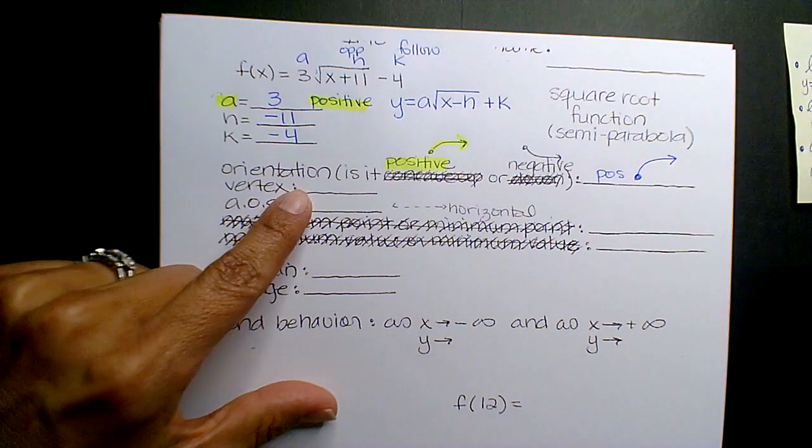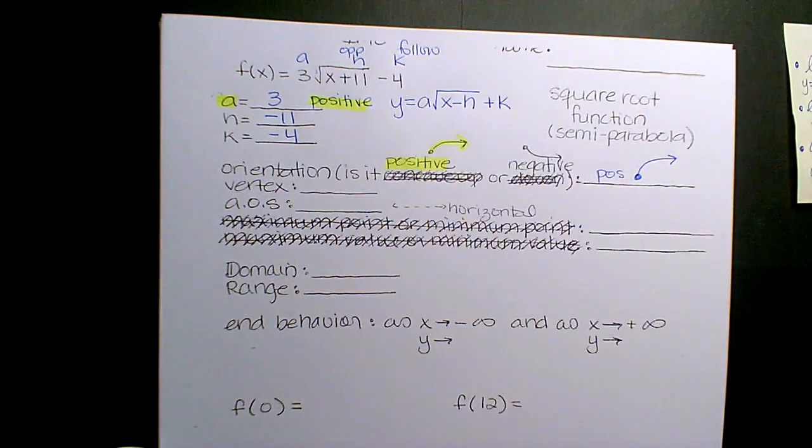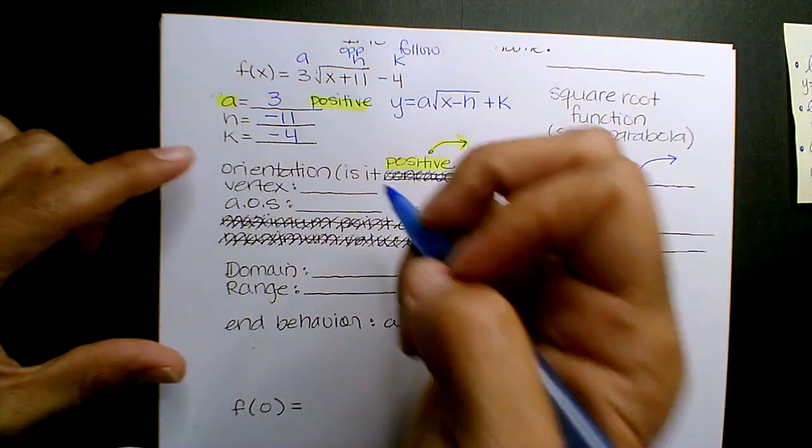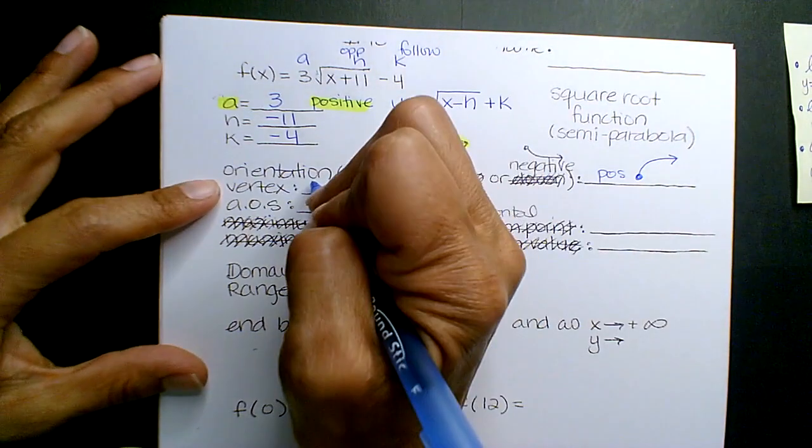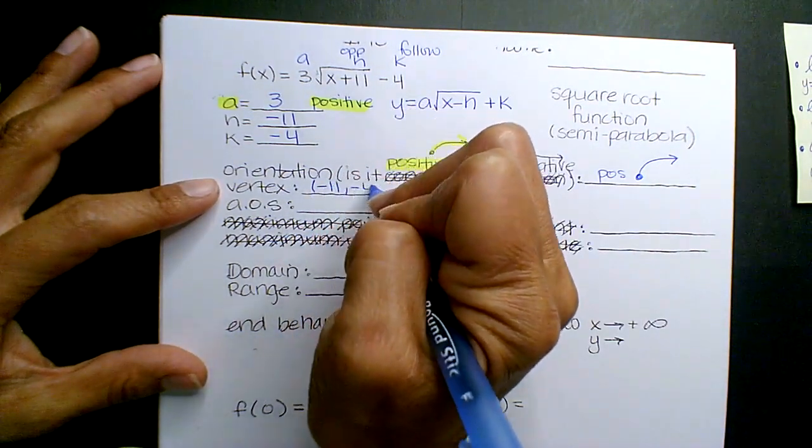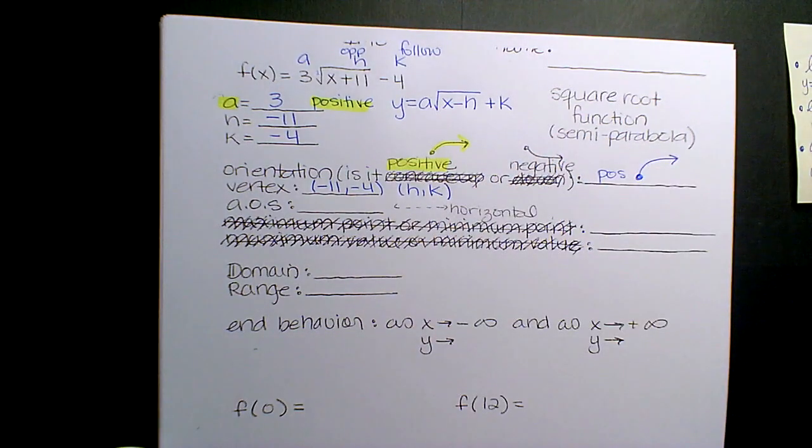So then what's your vertex? 3, negative 11. Not 3, go down one slot. You gave me A, H, K. 3, negative 4. H, K. Look at H, look at K. Negative 11, negative 4. Very good. Remember, vertex is always H, K.